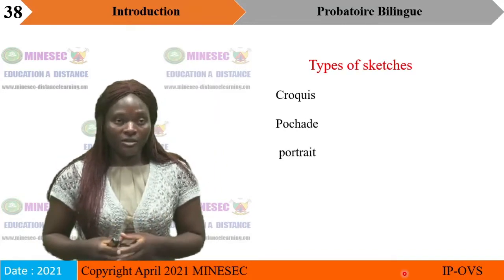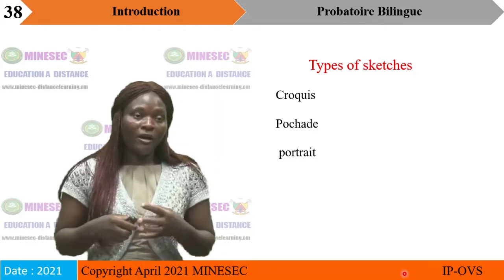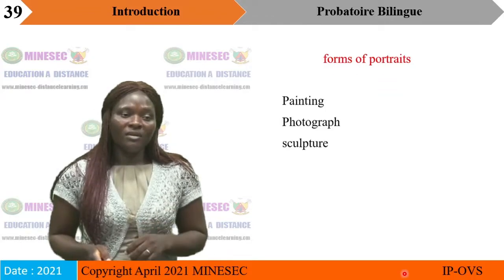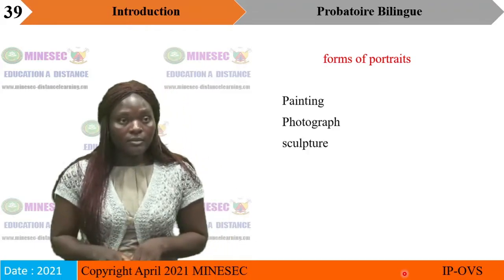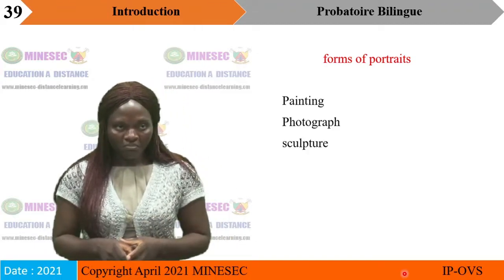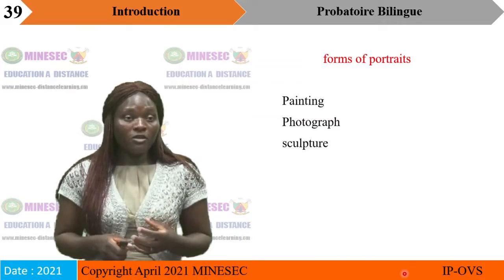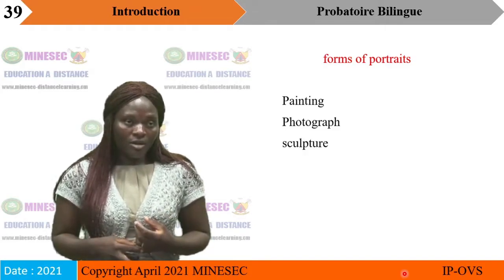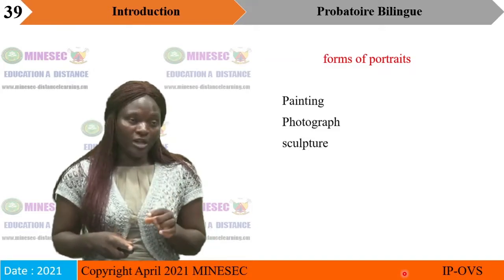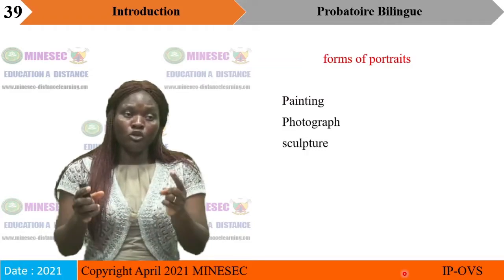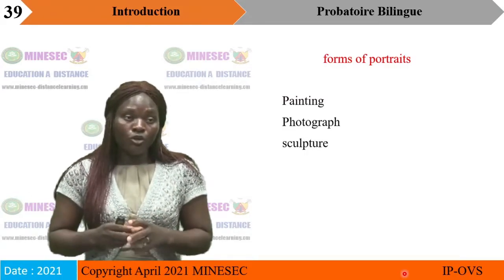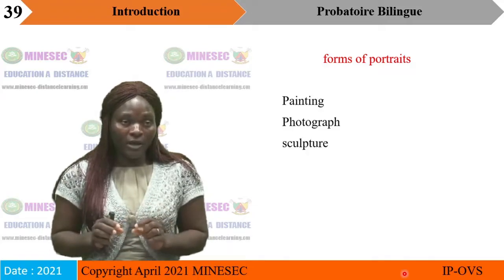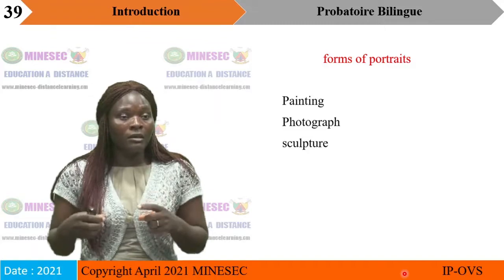There are three main types of sketches. The forms of portraits are: painting, photographs, and sculpture. You can produce a portrait by drawing and painting it, by using a camera (photography), or by sculpting it.